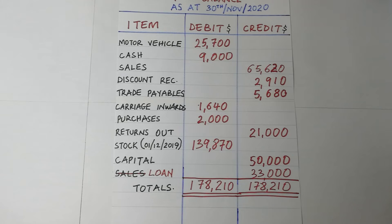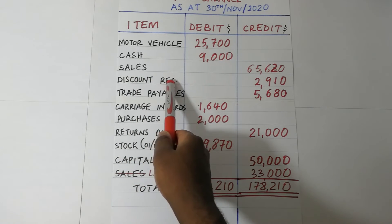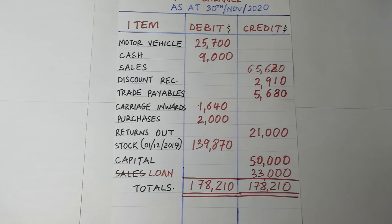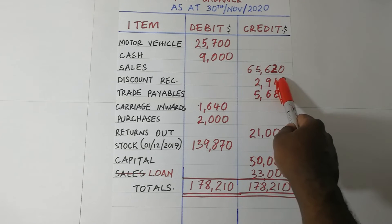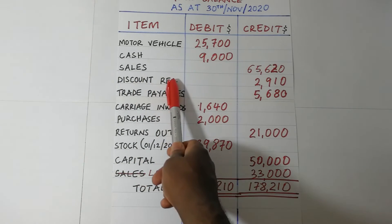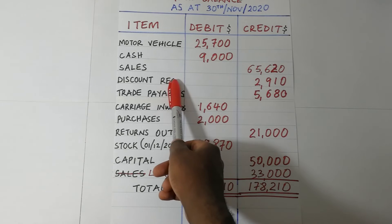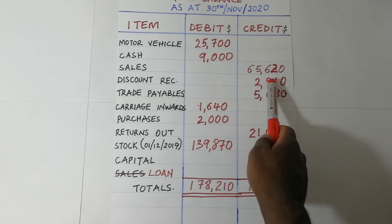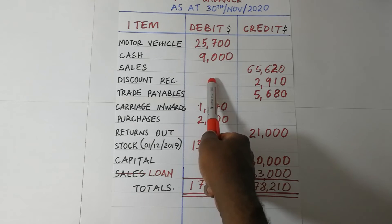Before closing, a few comments on some variants of the accounts. Discount received is an indirect income — you buy from suppliers and pay less than you should because they give you a discount. Being indirect income, it is a credit balance. However, discount allowed is the reverse: when you give your customers a discount to induce prompt payment, that is an expense. All expense accounts are debit balances, so discount allowed will be a debit balance.